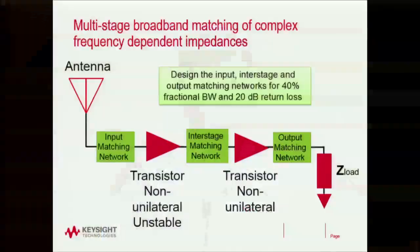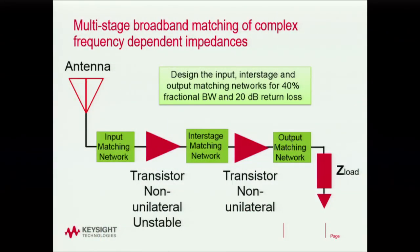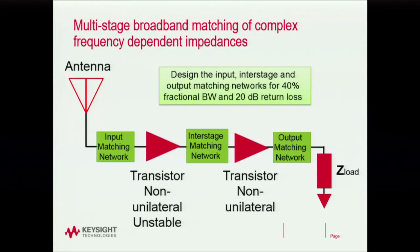This is then followed by an interstage matching network that feeds into the next stage of a transistor defined not by an equivalent circuit but by its S-parameters. That transistor then has to be matched to a load. We want to achieve a 40% bandwidth centered at 2.5 GHz with a 20 dB return loss. This is quite a challenging problem, and we're going to see how we tackle it.